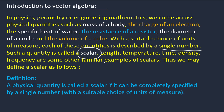A physical quantity is called a scalar if it is completely specified by a single number with a suitable unit of measurement. Writing just '5' is not enough — we need to specify whether it is length, temperature, or time. Basically, whenever a physical quantity has only a single number, that defines a scalar quantity.